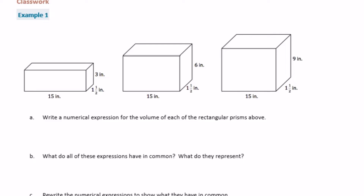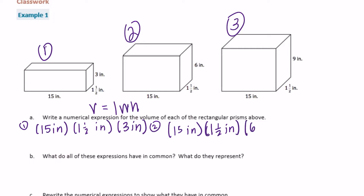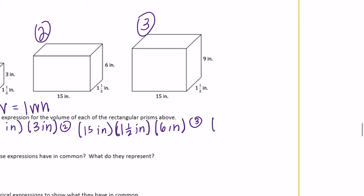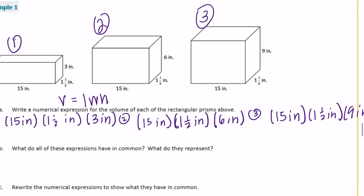Part A: Write a numerical expression for the volume of each of the rectangular prisms above. The volume formula we've been working with is volume equals length times width times height. The first one would be fifteen inches times one and a half inches times three inches. The second one would be fifteen inches by one and a half inches by six inches. And then the third one would be fifteen inches times one and a half inches times nine inches. So there are our three expressions for the volume of those rectangular prisms.